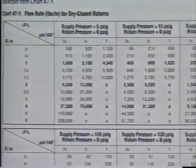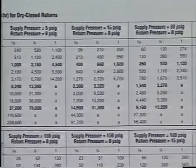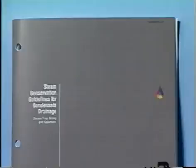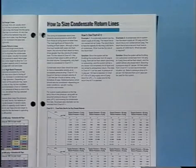The proper sizing and pitching of condensate lines are the only means of guarding against this type of problem. The Armstrong Steam Conservation Handbook includes a chart that helps you in deciding the correct condensate return line size for your particular application.